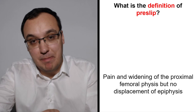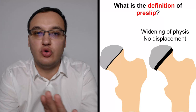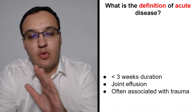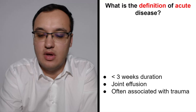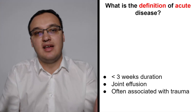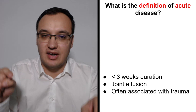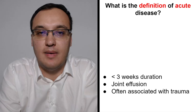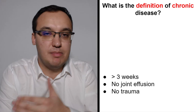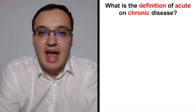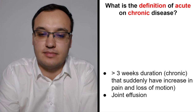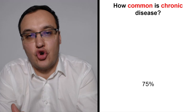Pre-slip: pain and widening of the physis but no displacement of the epiphysis. Acute: duration of less than three weeks, with joint effusion and sometimes associated with trauma. Chronic: more than three weeks, no joint effusion, no trauma. Acute-on-chronic: a chronic condition with a sudden acute episode on top.